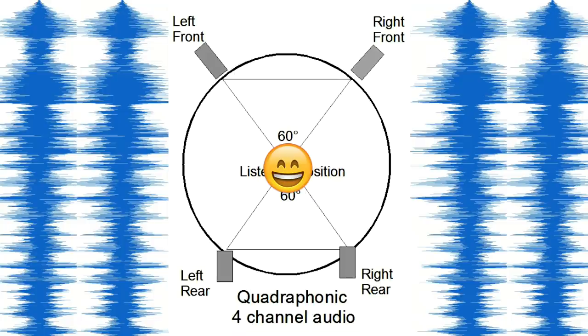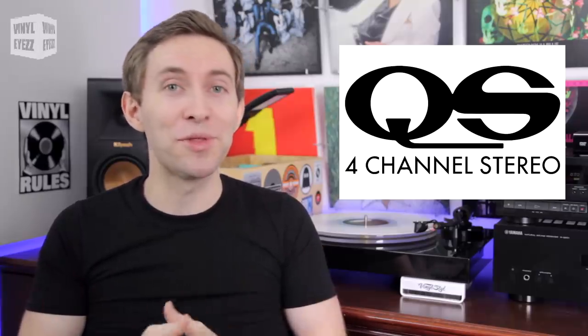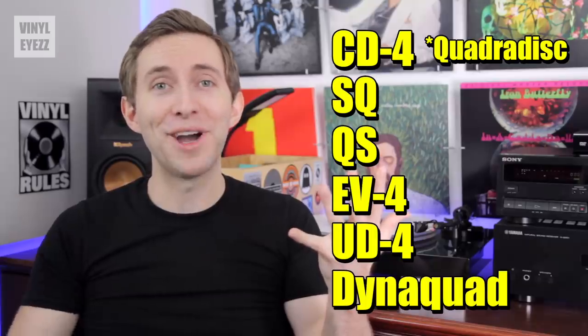Essentially, this configuration was an early attempt at surround sound — what we'd call today a 4.0 setup. Although this idea may sound simple on paper, actually achieving it was another thing entirely. During this time, there were several different companies with different ideas of how to produce quad sound on vinyl records. There were a total of six different formats all competing with each other at the same time. These formats were CD4, also known as QuadraDisc, SQ, QS, EV4, UV4, and finally DynaQuad.